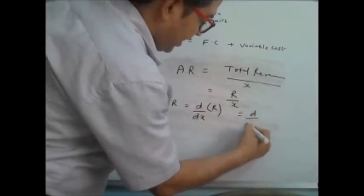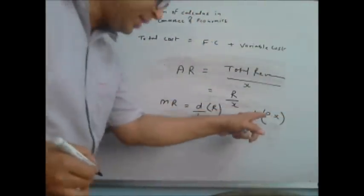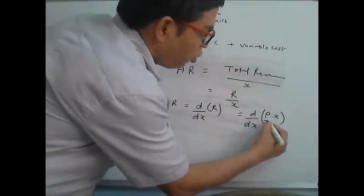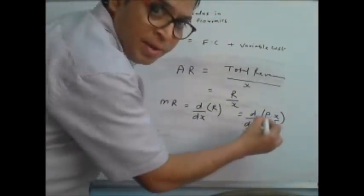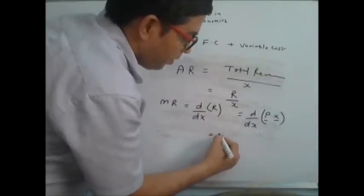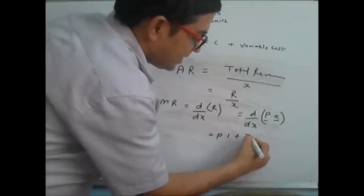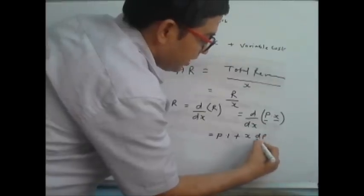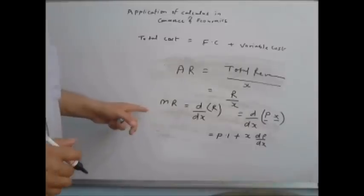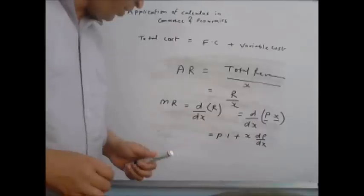Marginal revenue can further be written as d/dx of (x times p). As you know, p is the price of one unit and x is the number of units — both are variable. So we differentiate using the product rule: p as it is times differentiation of x (which is 1), plus x as it is times differentiation of p (which is dp/dx). So marginal revenue equals p plus x times dp/dx. Hope you got the meaning of each and every term.